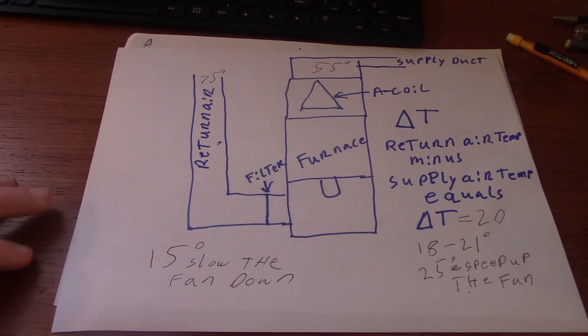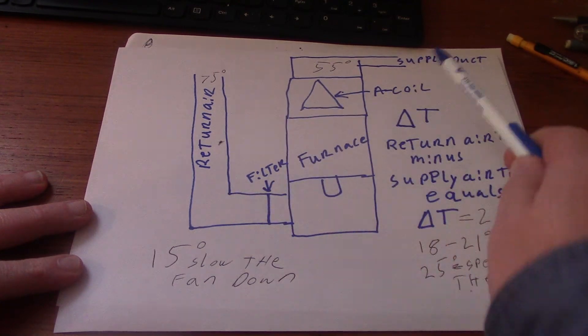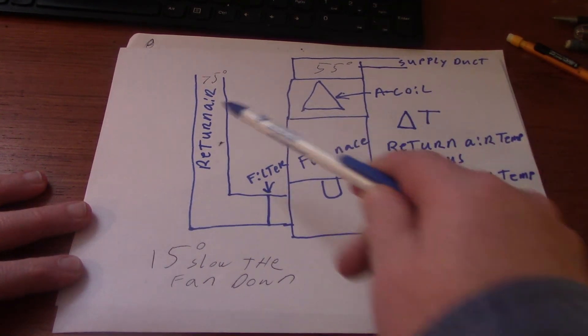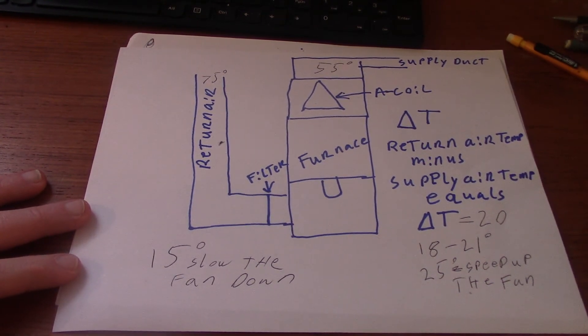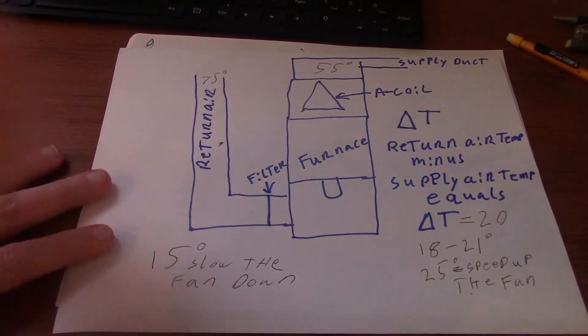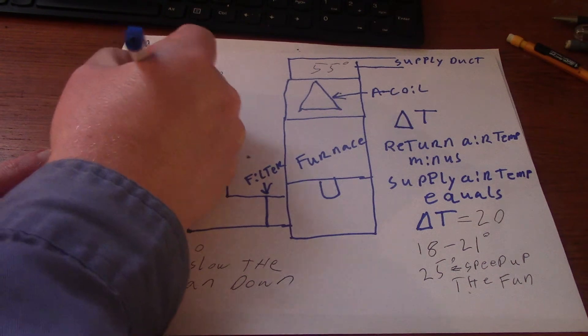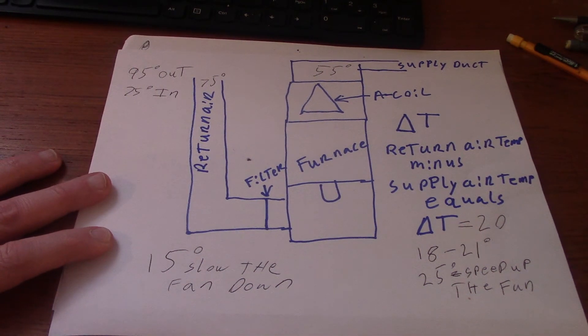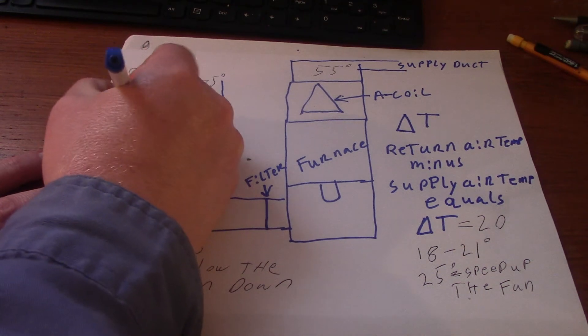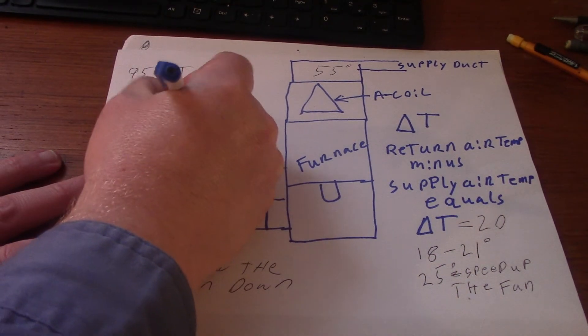And that's all it is. Return air minus supply air. These are generic parameters of 75 and 55. Remember your design conditions for an air conditioner: 95 degrees outside, 75 degrees inside, and around 55% relative humidity. So that's your design parameters and a little bit of info on the Delta T.